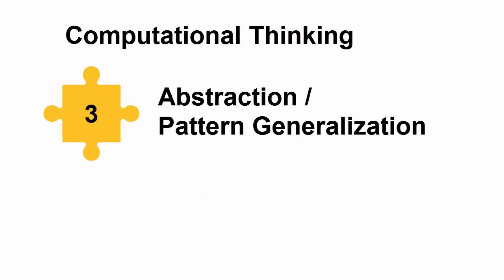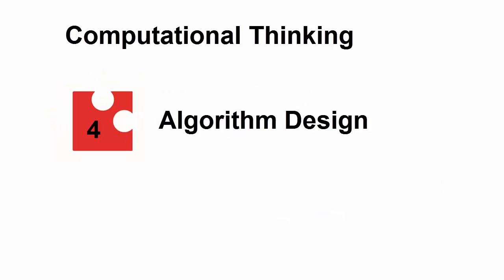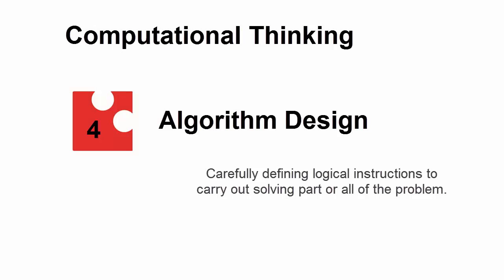Abstraction and pattern generalization — generalizing variables and determining their relationships, which may allow for modeling and automation. Algorithm design — carefully defining logical instructions to carry out solving part or all of the problem.